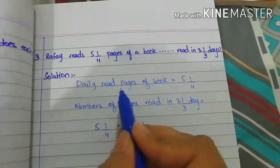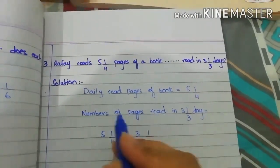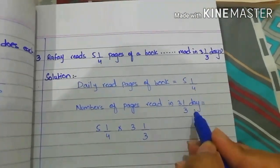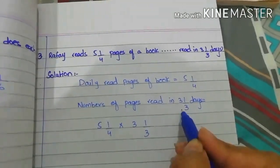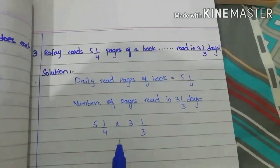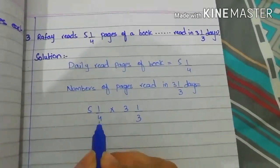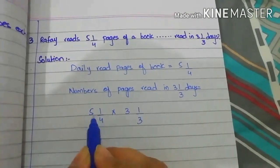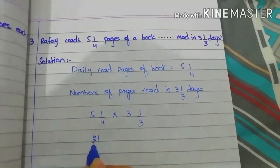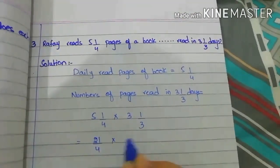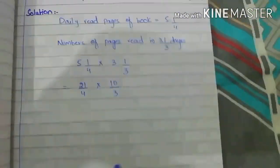Daily pages read = 5 whole 1/4. To find pages in 3 whole 1/3 days, we multiply this fraction by the number of days. First, convert the mixed fractions to improper fractions: 5 whole 1/4 → 5×4 = 20, 20+1 = 21, so 21/4. And 3 whole 1/3 → 3×3 = 9, 9+1 = 10, so 10/3.